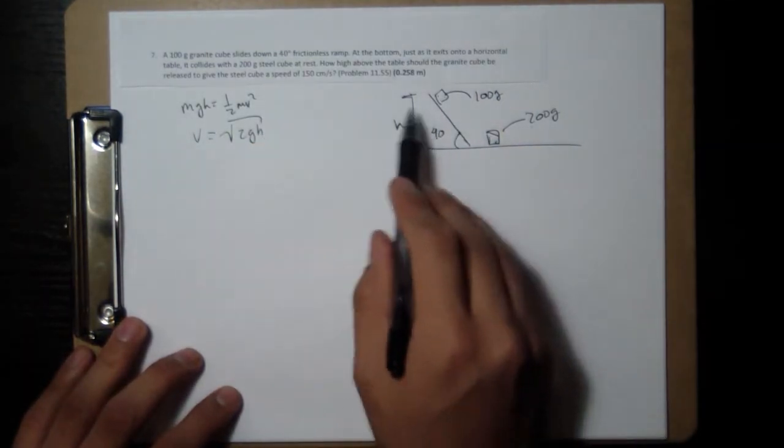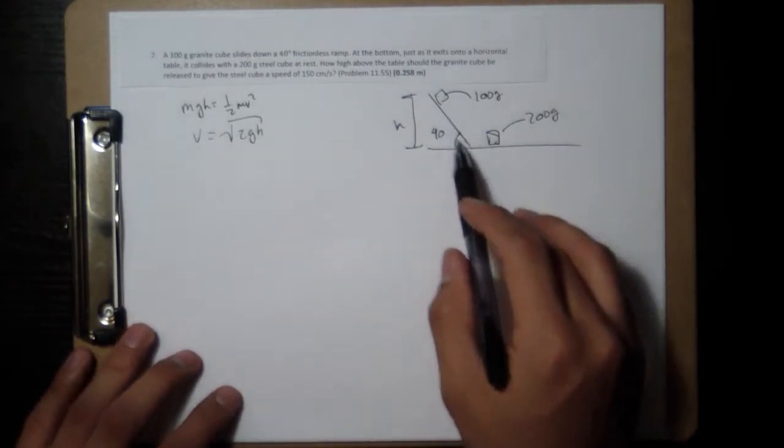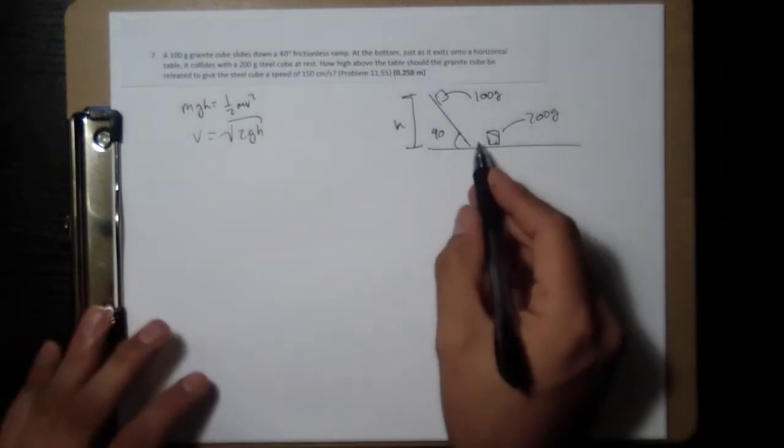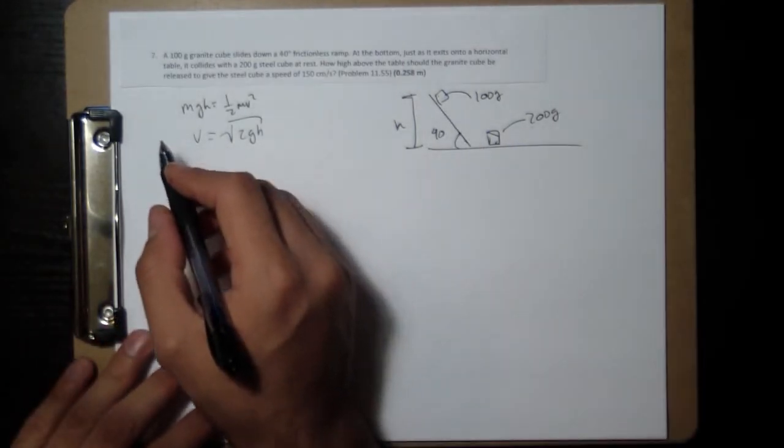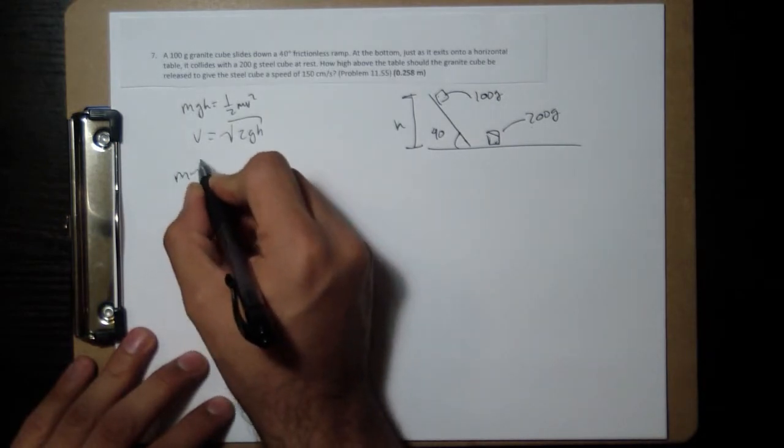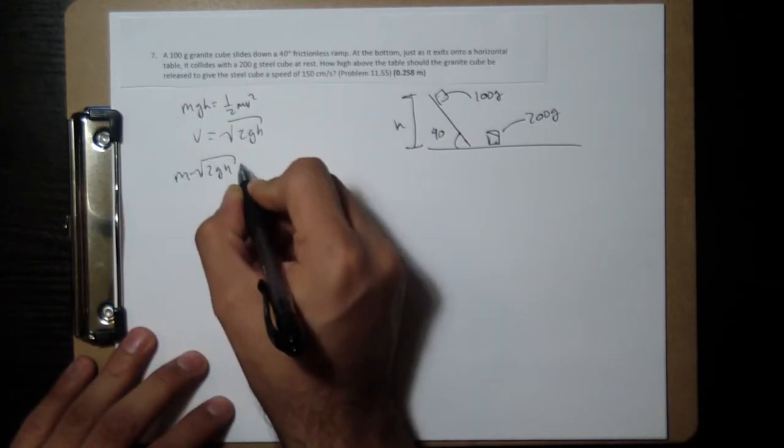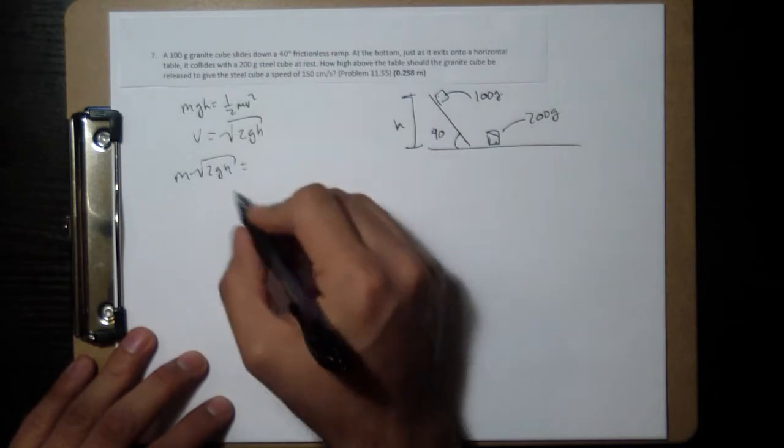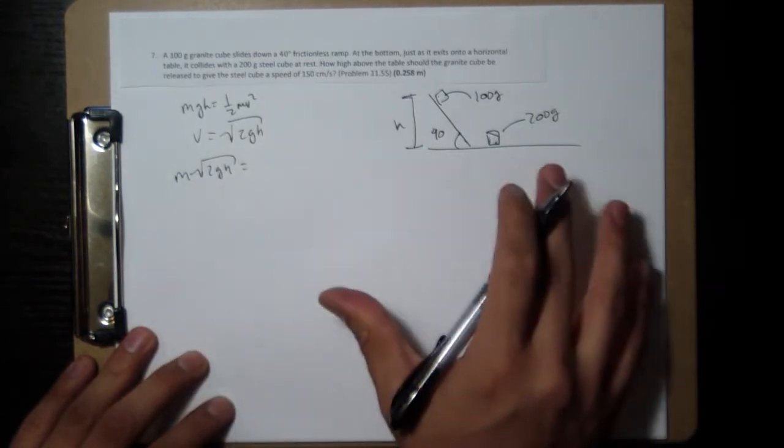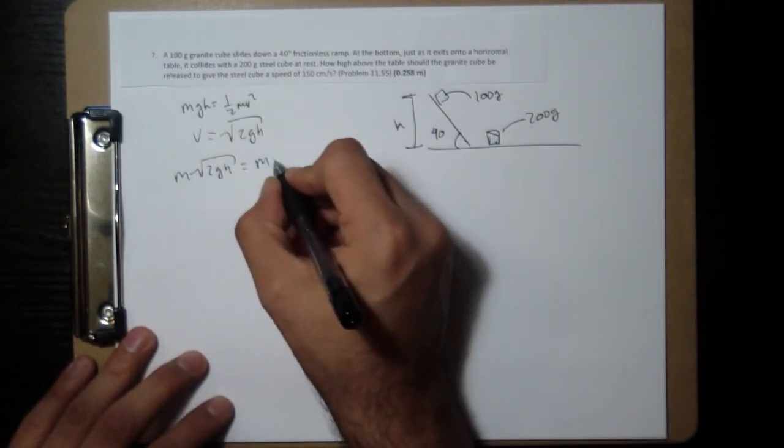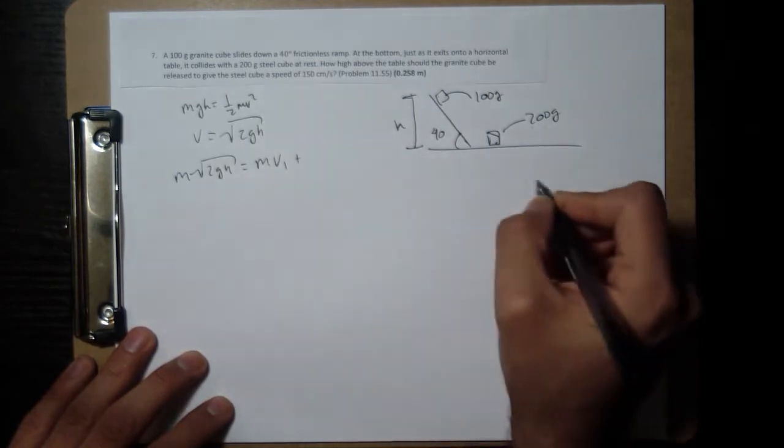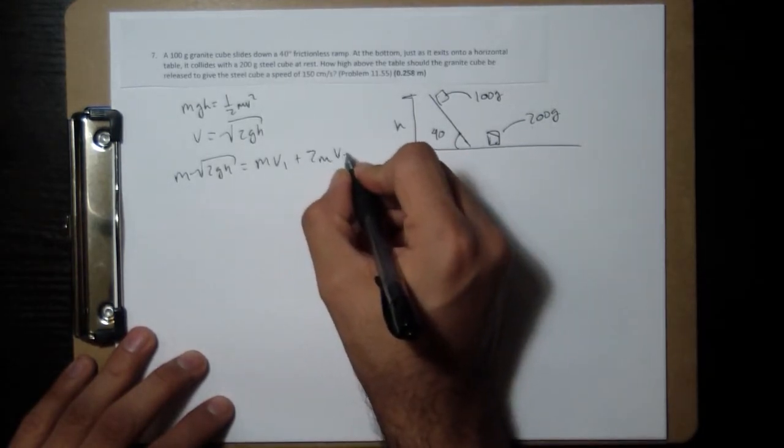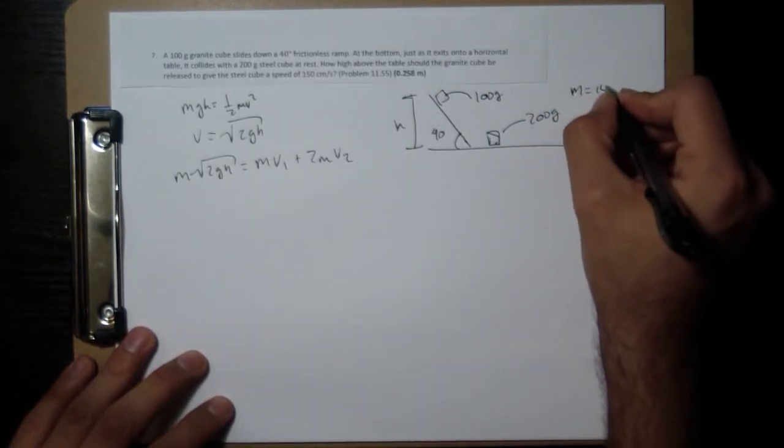And then, when they hit, we're going to have conservation of momentum. So you're going to have m times square root of 2gh equals, this is the initial momentum,